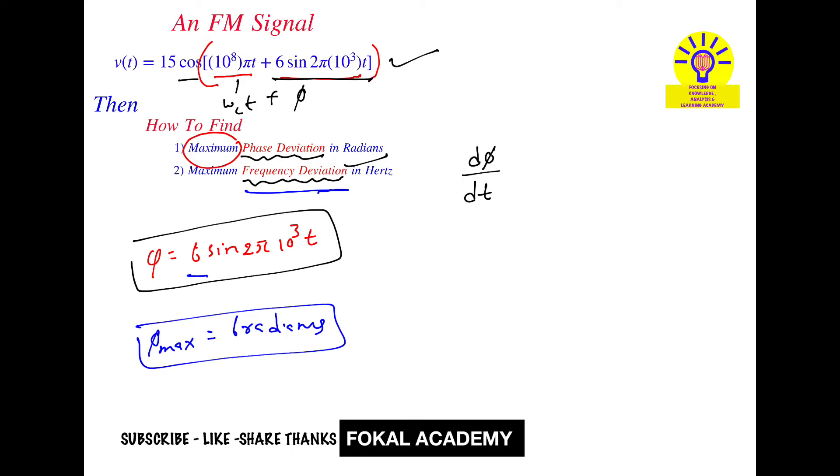In that function, take the maximum value, which is the maximum amplitude. That is called maximum frequency deviation. Now differentiate this function: d/dt of Φ = 6 sin(2π × 10³ t). Here we are differentiating this function with respect to t.